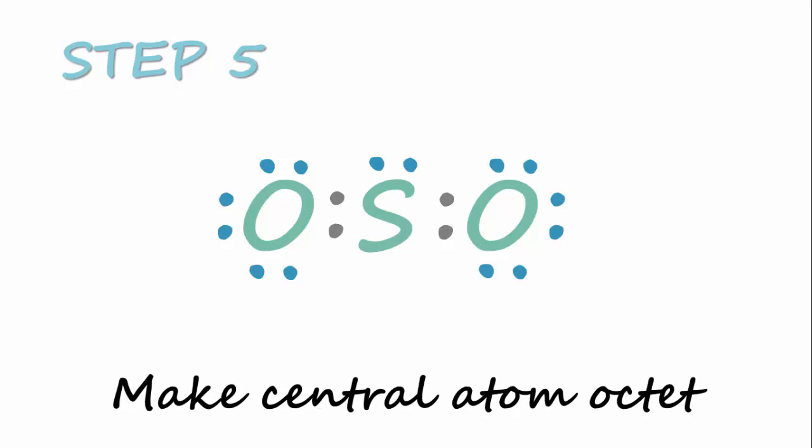Step 5, if there are not enough electrons to give the central atom an octet, then use one or more pairs of non-bonding electrons to form double or triple bond. So in our case, sulfur is lacking only two more electrons to become octet. So we can borrow any one pair of non-bonding electrons from either one of the oxygen atom.